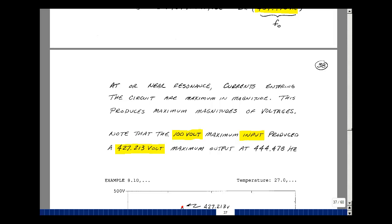At or near resonance, currents will be entering the circuit that are nearly their maximum value, and that'll produce maximum voltage magnitudes in our circuit.